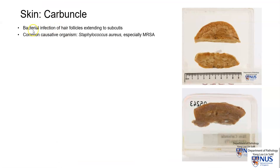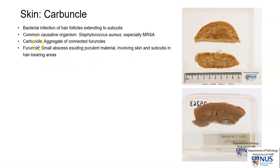A carbuncle is a localized area of bacterial infection of hair follicles that extends quite deep to the subcutis. The commonest causative organism is Staphylococcus aureus, especially methicillin-resistant Staphylococcus aureus. A carbuncle is defined as an aggregate of connected furuncles. A furuncle is a smaller, localized abscess that exudes purulent material, again involving the skin and subcutis, usually around the hair follicles.